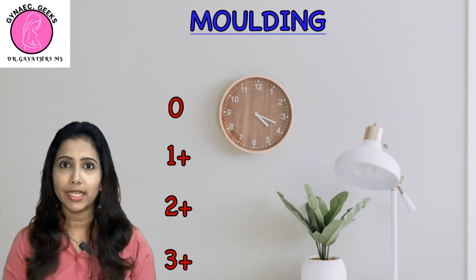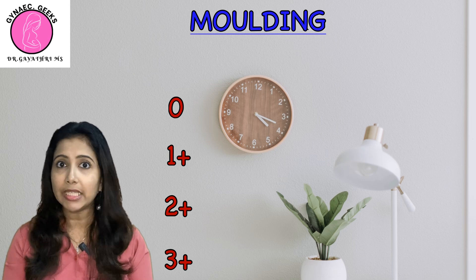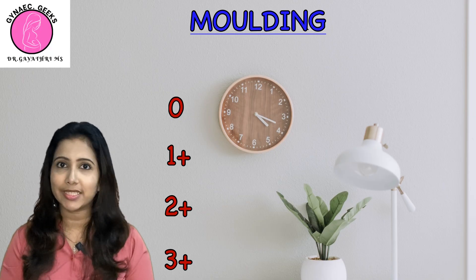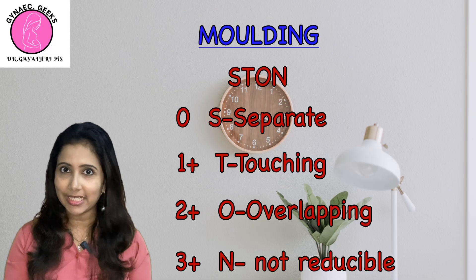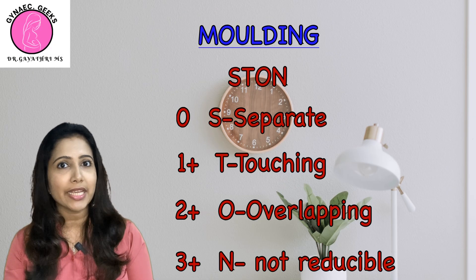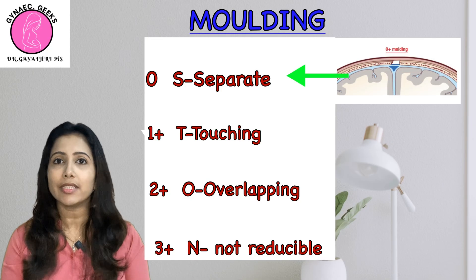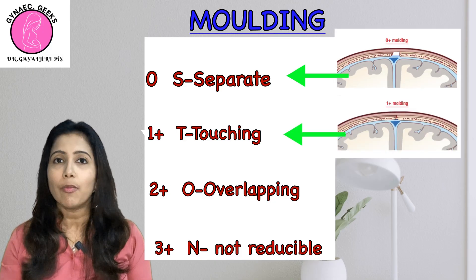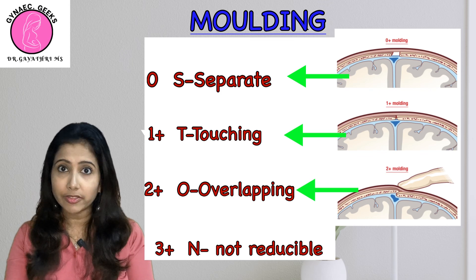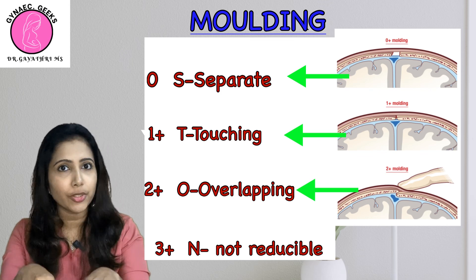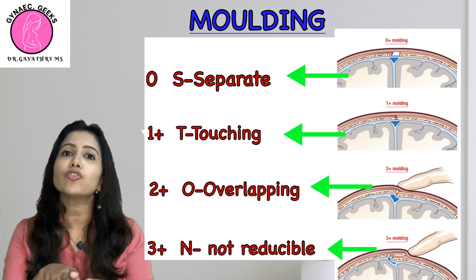Next is moulding, which is basically the overlapping of skull bones. Moulding can be 0, 1+, 2+, or 3+. You can remember this using the mnemonic STON — S is separate, T is touching, O is overlapping, and N is non-reducible. In grade 0, all sutures are separate. In 1+, the sutures are just touching. In 2+, they are overlapping but reducible. In 3+, there is overlapping that is not reducible.